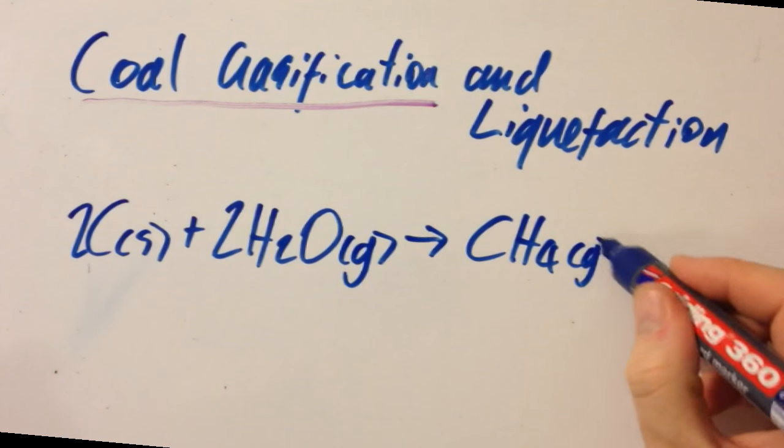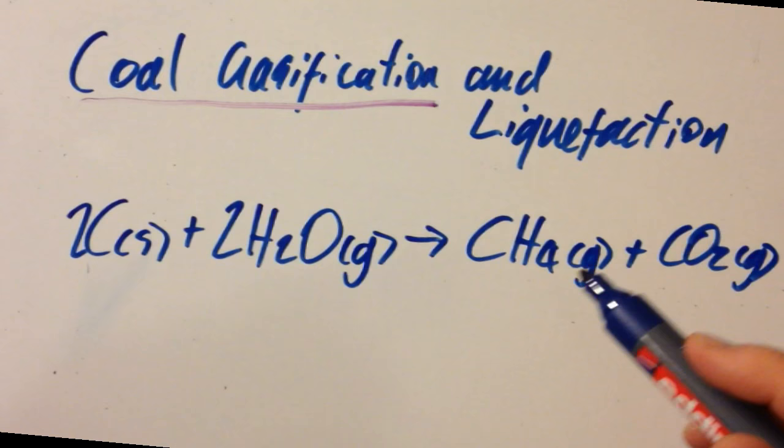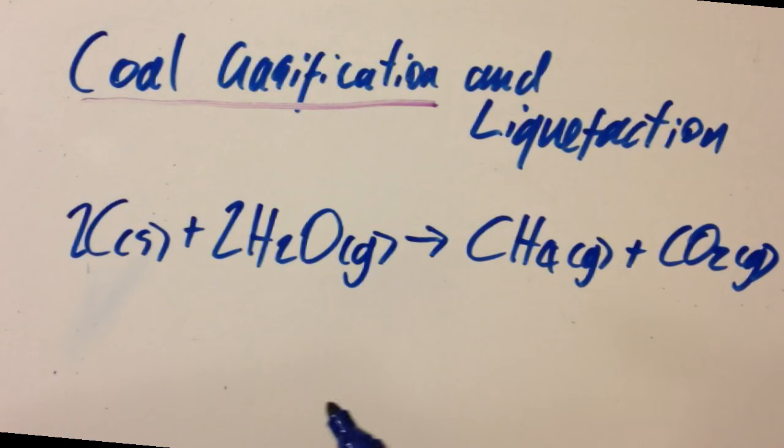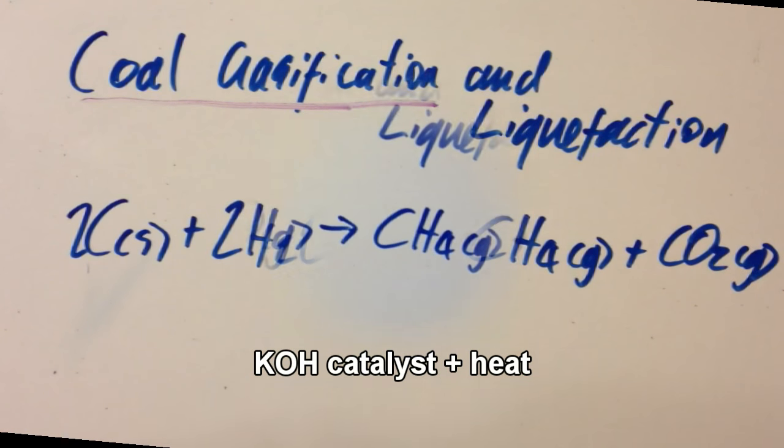And that makes methane and carbon dioxide gas. So this is a different equation to make the methane. Instead of having water as a product that you don't need, now you've got carbon dioxide as a product that you don't need.